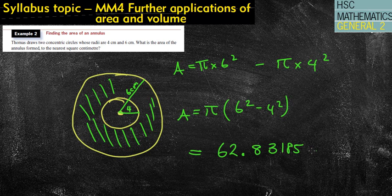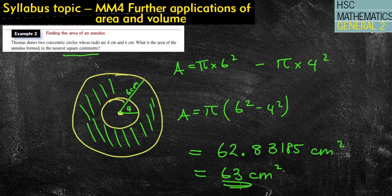8, 5, and this is centimeters squared. Now, the question, I just want to make sure I answer the question, what is the area of annulus to the nearest square centimeter? Well, that means the nearest whole number, so 63 centimeters squared. Always important to go back and read that initial question.